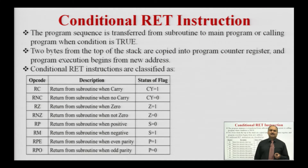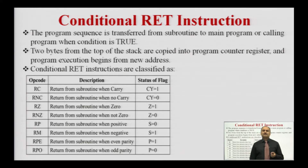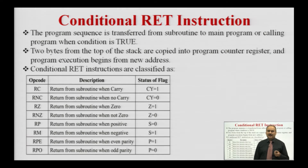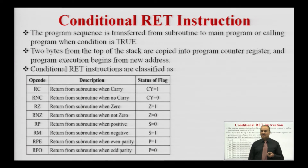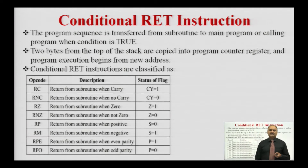Next is the conditional return instruction. According to the status of the flags, the return instruction is classified as the conditional return instruction. Whenever the conditional return instruction is executed by the microprocessor, the processor transfers control from the subroutine back to the main program — it picks the returning address from the stack and loads it into the program counter register when the condition is satisfied. The conditional return instructions are: RC, RNC, RZ, RNZ, RP, RM, RPE, RPO.